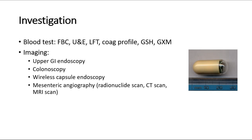In cases of overt angiodysplastic bleed, mesenteric angiography may be required to confirm the location of a lesion in order to plan for intervention. Angiography can involve either radionuclide scanning, CT scanning, or MRI scanning to image the GI tract vascular supply, after the injection of a radio-opaque contrast agent into the vessels.